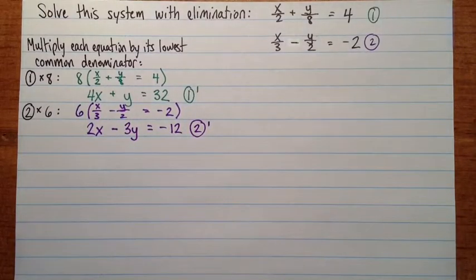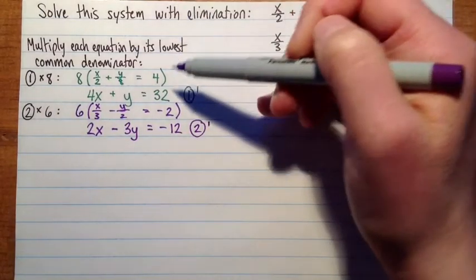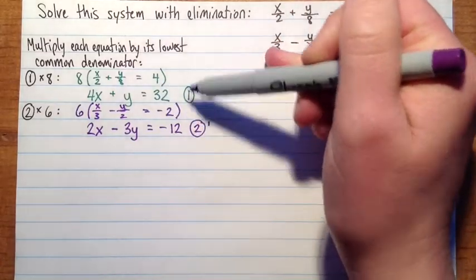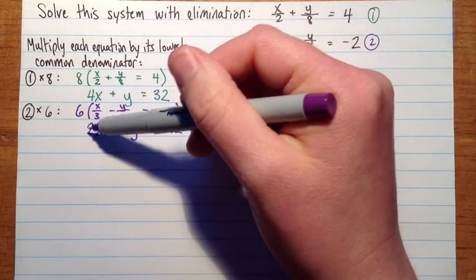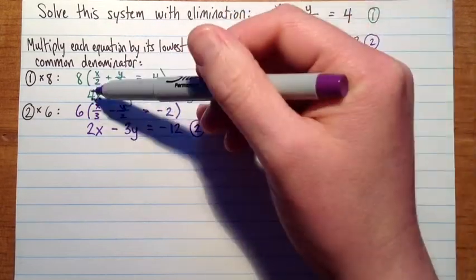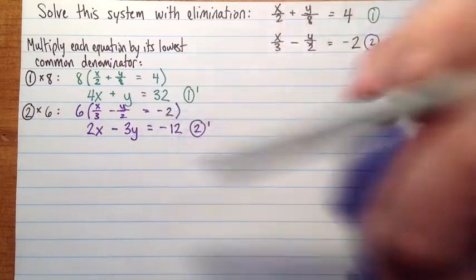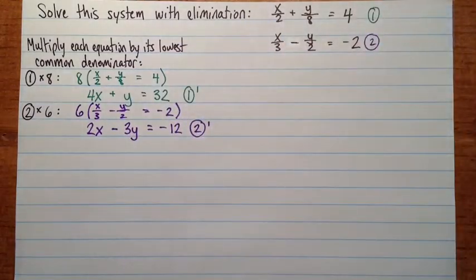Okay, so now we're ready to start. It's like as if we had any other system of equations with 1 prime and 2 prime here, and we'd like to eliminate them. Now this one, so we've checked the coefficients. We don't have any terms with the same coefficients. For x, we've got 4 and 2, and for y, we've got 1 and negative 3.